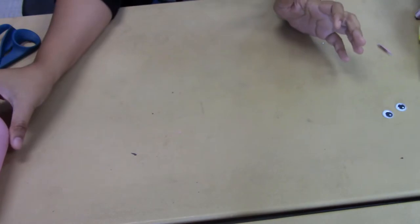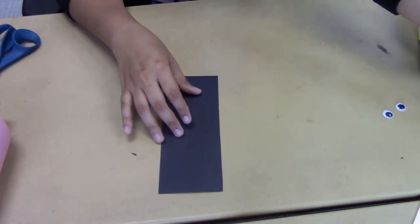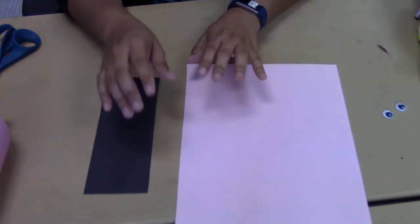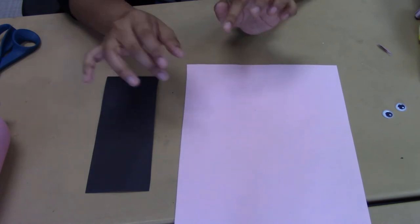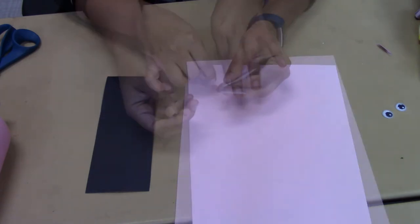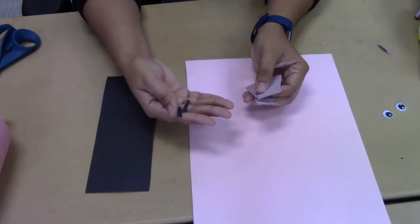Then we are going to set that aside and we are going to use our construction paper to cut out the legs, accents for the nose and the ears. So for the nose you are just going to want two little slits for the nostrils of the pig.